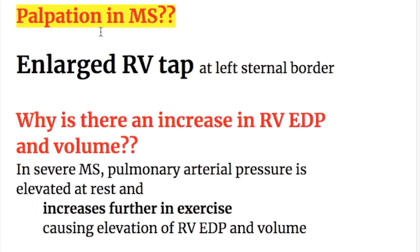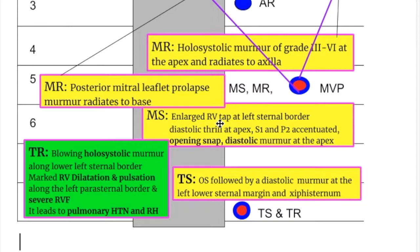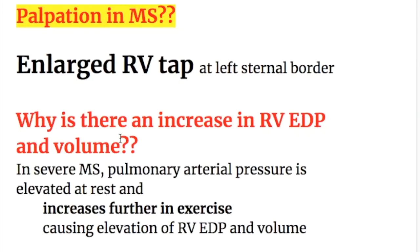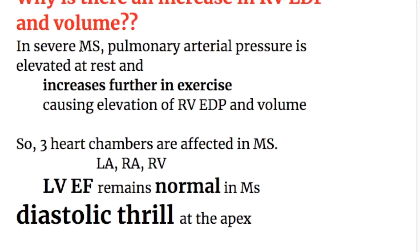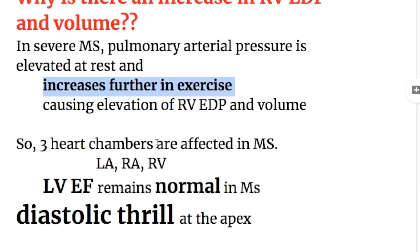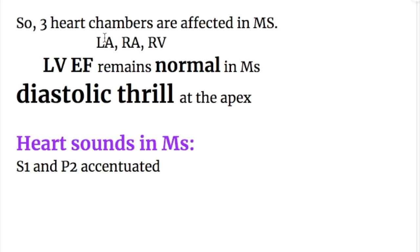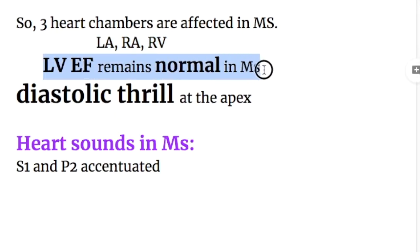On palpation in mitral stenosis, there is an enlarged right ventricular tap at the left sternal border and a diastolic thrill at the apex. In severe mitral stenosis, pulmonary arterial pressure is elevated at rest and increases further with exercise, causing elevation of right ventricular end-diastolic pressure and volume. Three heart chambers are affected in mitral stenosis: the left atrium, right atrium, and right ventricle. Left ventricular diastolic pressure and ejection fraction remain normal.